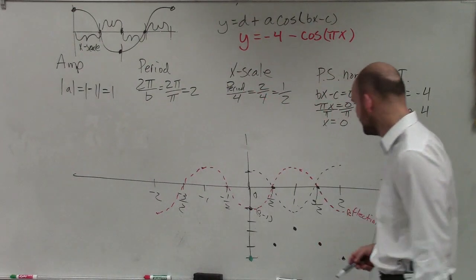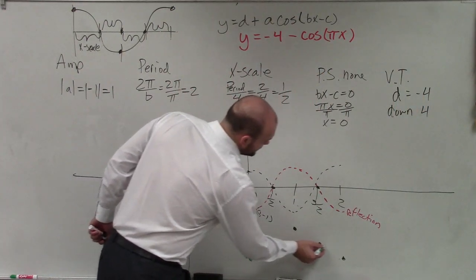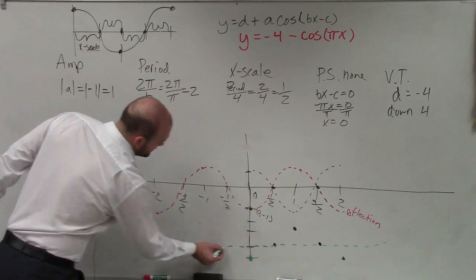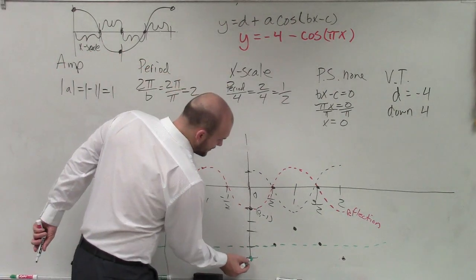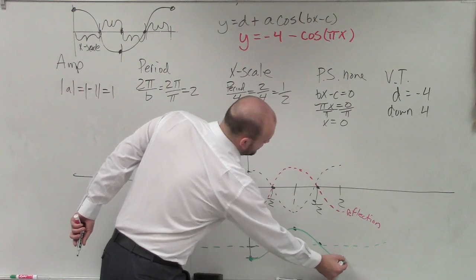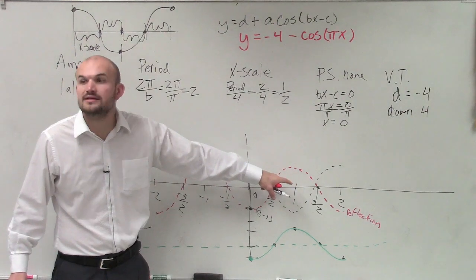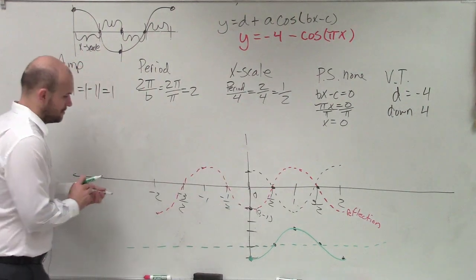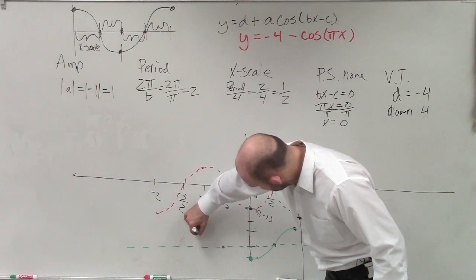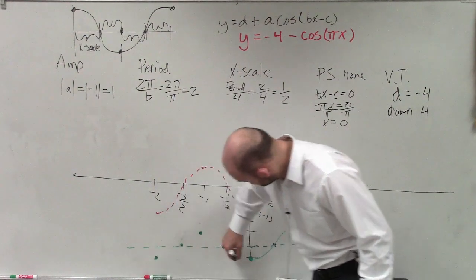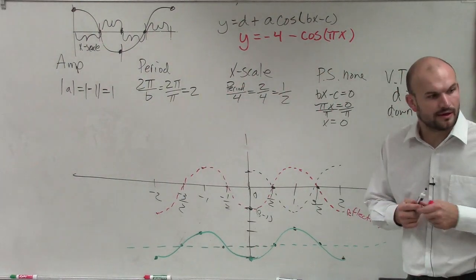I'm transforming the red graph. A lot of times it's also helpful to transform the x-axis so you can see where the new x-axis is, because students get confused. But your final graph should look like this — it's a direct reflection of the red graph shifted down. I'll do the exact same on the other side: that would be a point, the next point, point, next point. So that's what it's going to look like, and that's it.